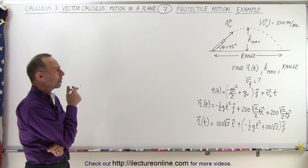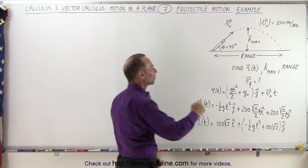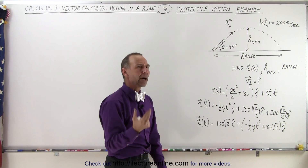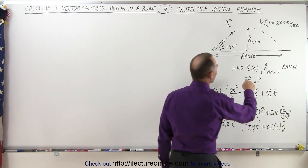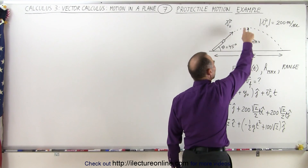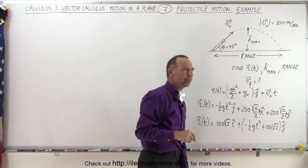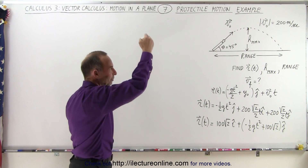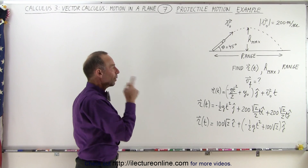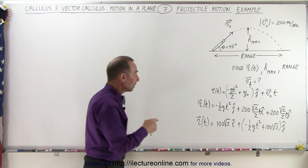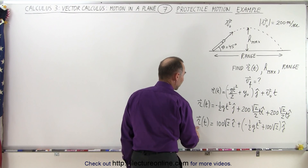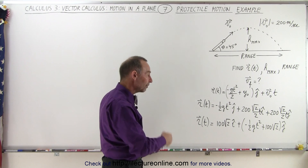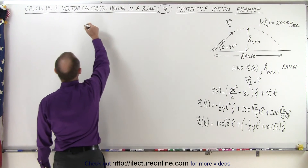Now we want to find the maximum height and the range. The maximum height can be found by recognizing that the velocity in the y direction will be zero at that point — the object is moving up, reaches maximum height where vy equals zero, and then falls back down. So we take the derivative of the position vector to get the velocity in the x and y directions.